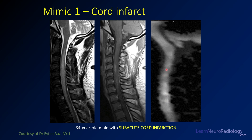For the cord, anywhere that's different from an adjacent segment of normal cord would be considered abnormal diffusion. If you see that and the patient has an acute onset of symptoms, think about an acute or subacute cord infarction — which was the diagnosis made in this case. That's a nice mimic to be aware of: cord infarction.